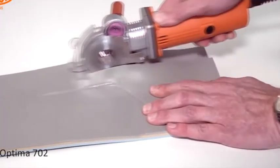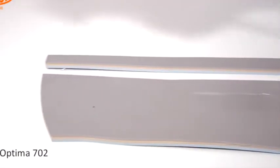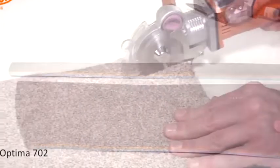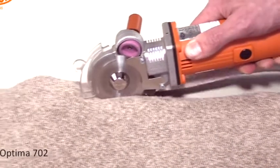The machine cuts aramid as well as heavy fiberglass, carpet, PVC, or fleece with ease straight and curve.